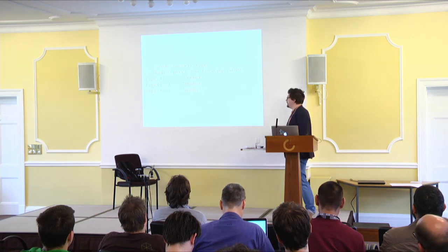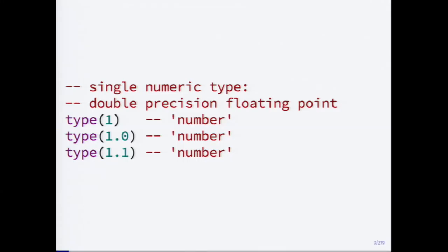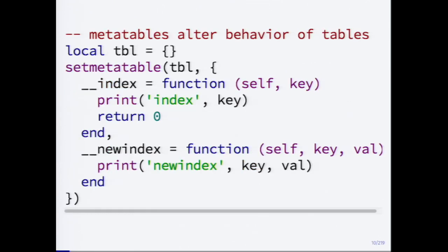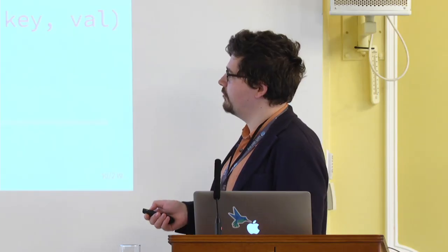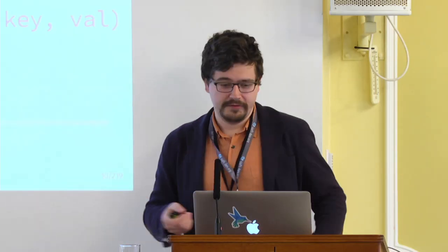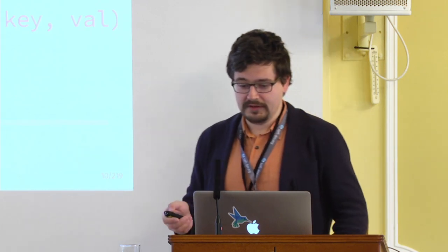The number type is a single numeric type — it's double-precision floating point, like in JavaScript. So all numeric values are considered numbers in Lua. There is also a feature called metatables, which allows you to alter the behavior of tables. You can set a metatable for a table, and this will change how the index operation and assigning a value to an index works.